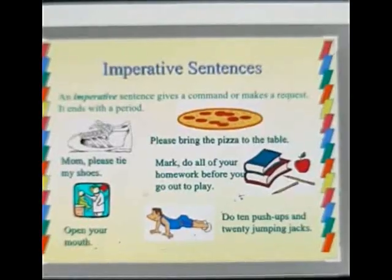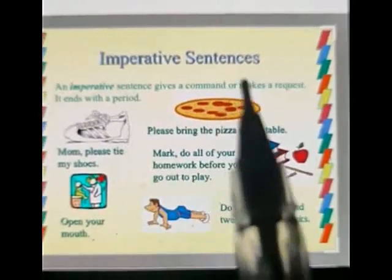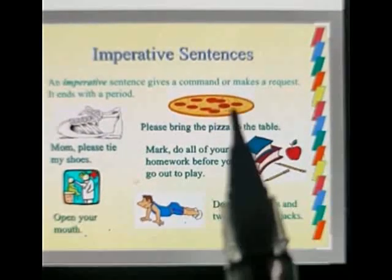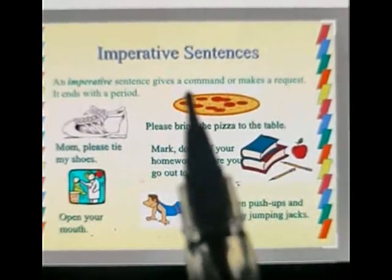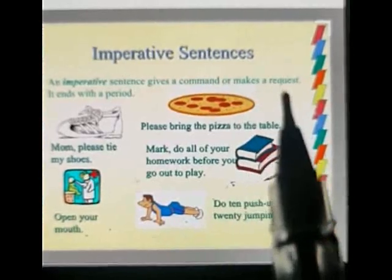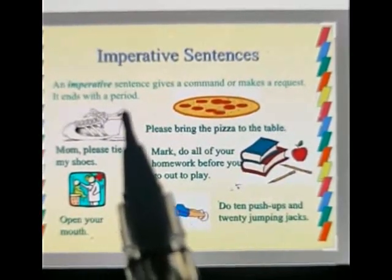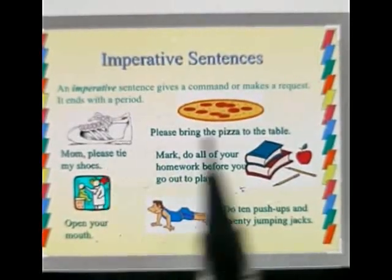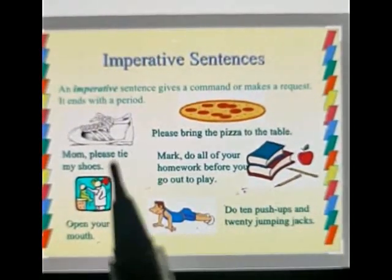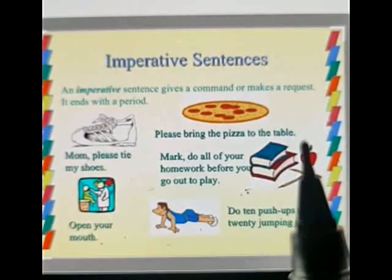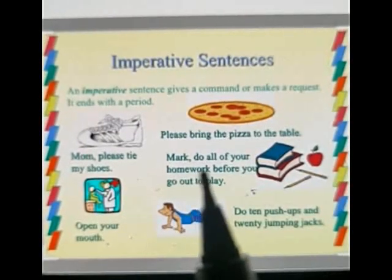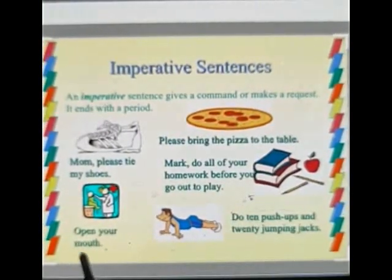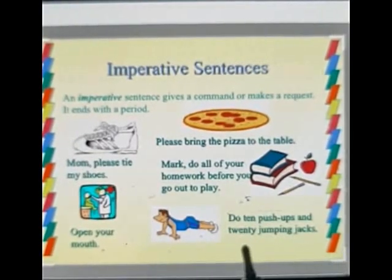The third kind of sentence is the imperative sentence. An imperative sentence gives a command or makes a request, and it ends with a period. These sentences are used to give a command, order, or request. For example: 'Mom, please tie my shoes' — here 'please' indicates a request. 'Please bring the pizza to the table.' 'Mark, do all of your homework before you go out to play' — this is a command. 'Open your mouth.' 'Do 10 push-ups and 20 jumping jacks.'